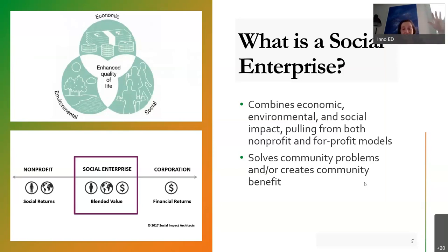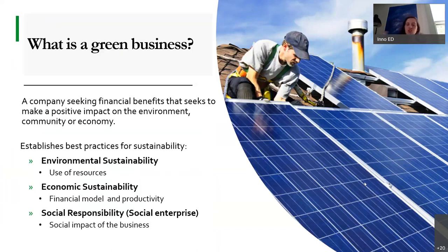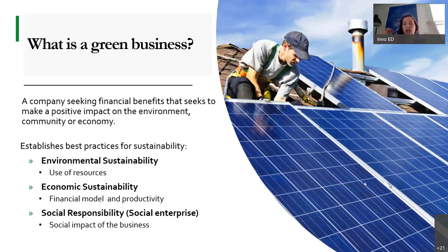A social enterprise is distinct from, though overlapping with, the idea of a green business. A green business is a company that seeks financial benefit — to employ staff, to see financial growth — and also seeks to make a positive impact on the environment, the community, or the economy. Best practices for sustainability include environmental sustainability, economic sustainability with a long-term productive financial model, and social responsibility. You'll hear a lot of overlap between social enterprise and green business — social enterprise often emphasizes social impact, a green business often more environmental impact, but both look at the triple bottom line.